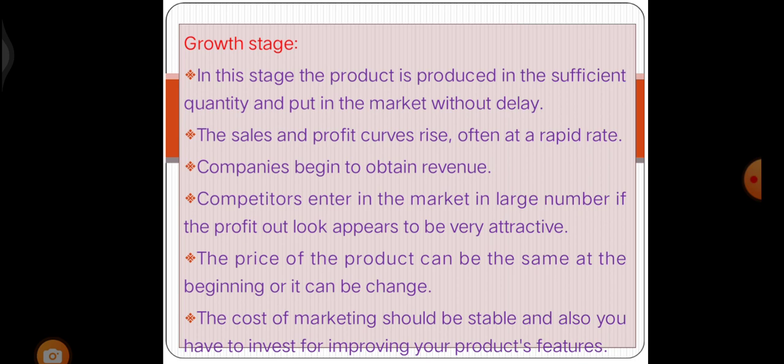The next stage is the growth stage. In this stage, the product is produced in sufficient quantity and put in the market without delay. The sales and profit curve rises, often at a rapid rate. Companies begin to obtain revenue as competitors enter the market in large numbers if the profit outlook appears to be very attractive. The price of the product can remain the same or it can be changed. The cost of marketing should be stable and investment should also go toward improving product features.